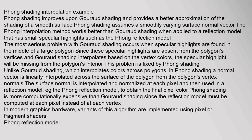The specular highlight will be missing from the polygon's interior. This problem is fixed by Phong shading. Unlike Gouraud shading, which interpolates colors across polygons, in Phong shading a normal vector is linearly interpolated across the surface of the polygon from the polygon's vertex normals. The surface normal is interpolated and normalized at each pixel and then used in a reflection model, e.g. the Phong reflection model, to obtain the final pixel color. Phong shading is more computationally expensive than Gouraud shading since the reflection model must be computed at each pixel instead of at each vertex.